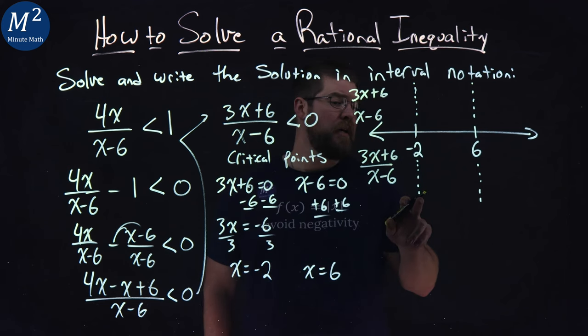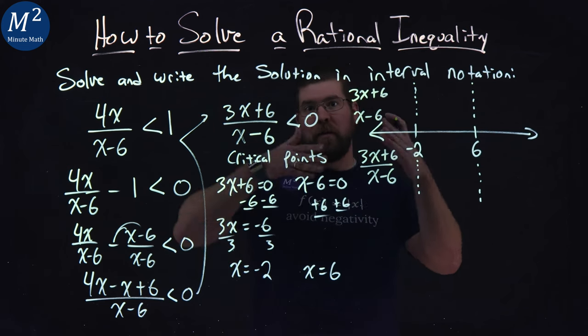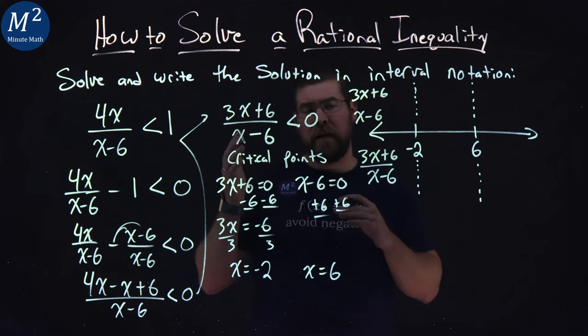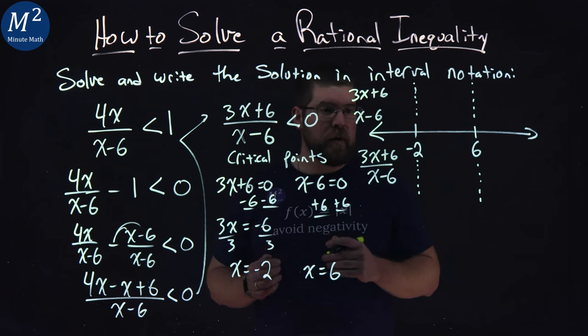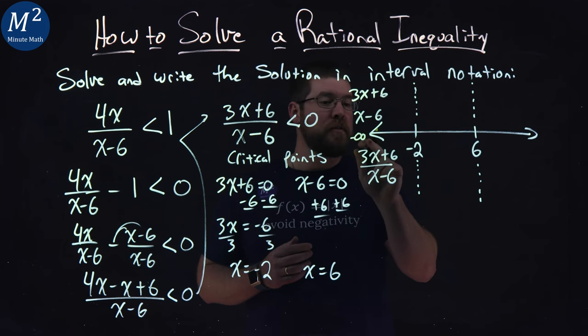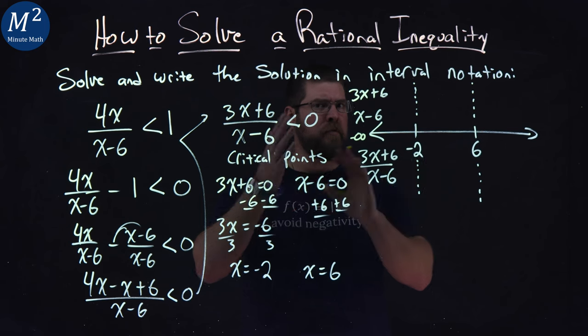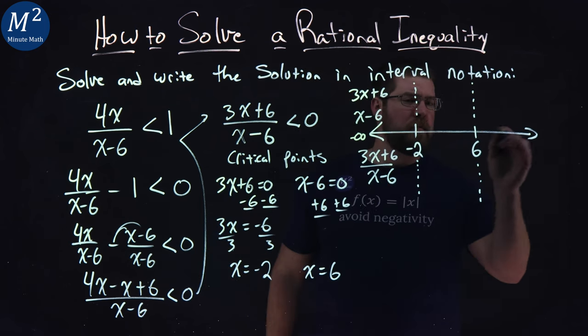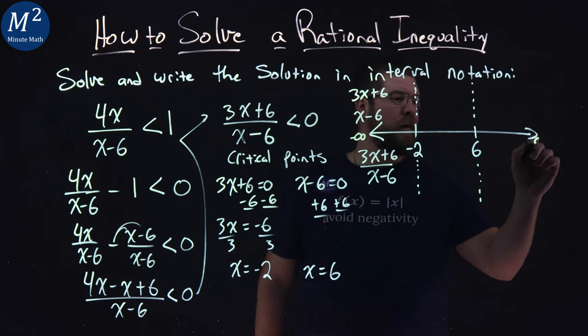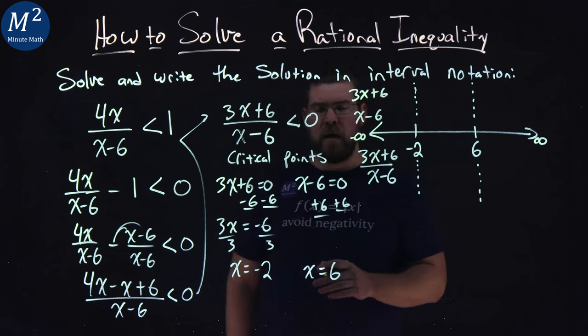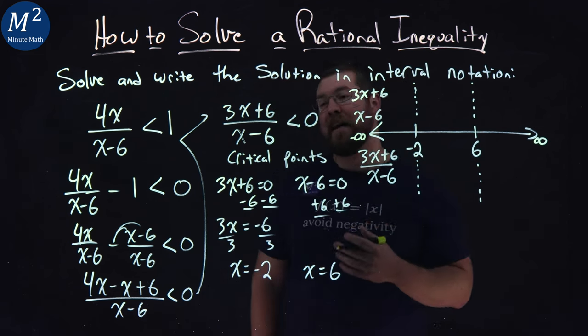And what we're going to care about here is the critical points tell us where this switches from a positive to negative solution for numbers in that range. So from negative infinity to negative 2, we have to figure out are these numbers positive or negative, and from negative 2 to 6, as well as 6 to positive infinity.